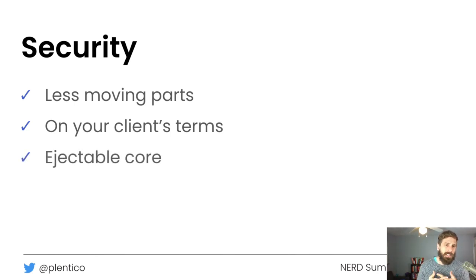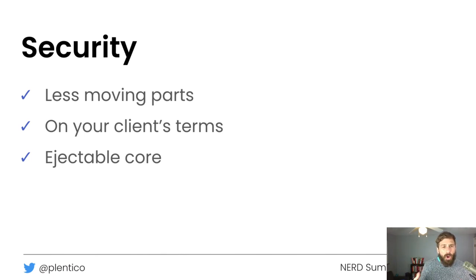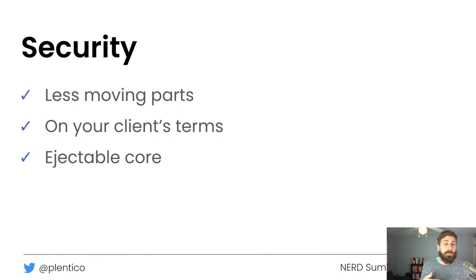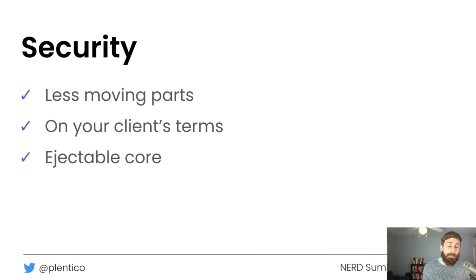We also do something called an ejectable core. All the core files — used for client-side routing, entry points, and CMS files — sit behind the scenes in a virtual file system. You never need to see them unless you want to eject and change something. If you don't eject anything from the core, every time Plenty updates you get those updates for free without doing any upgrading work. The next time you run your site, it will get the updated files automatically if you want it to.